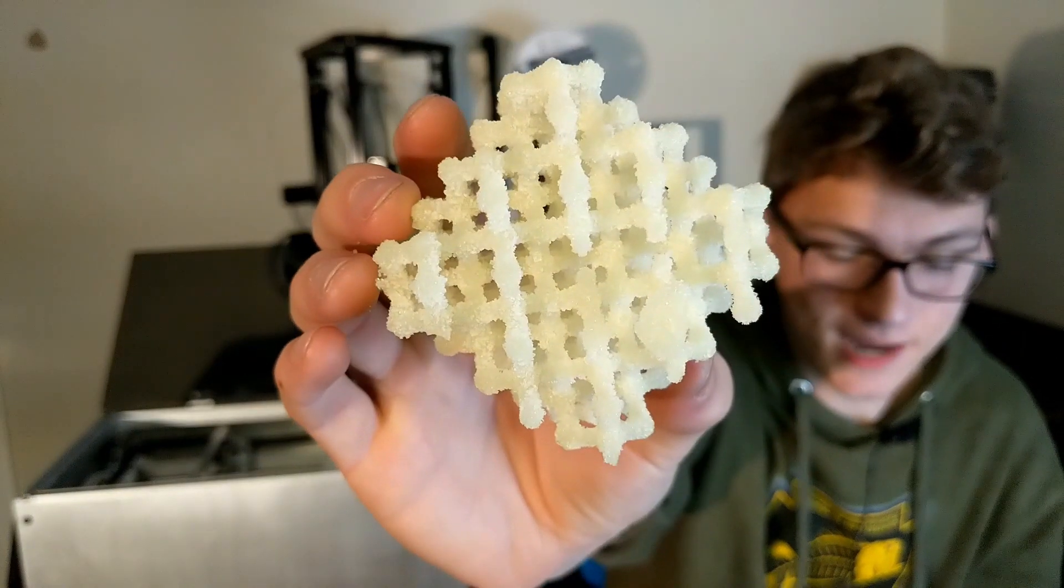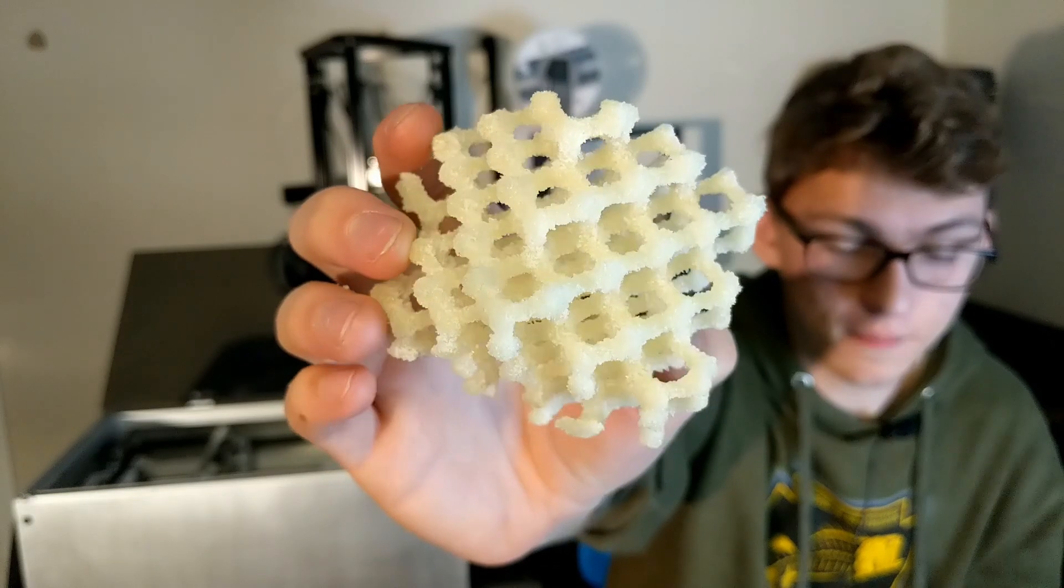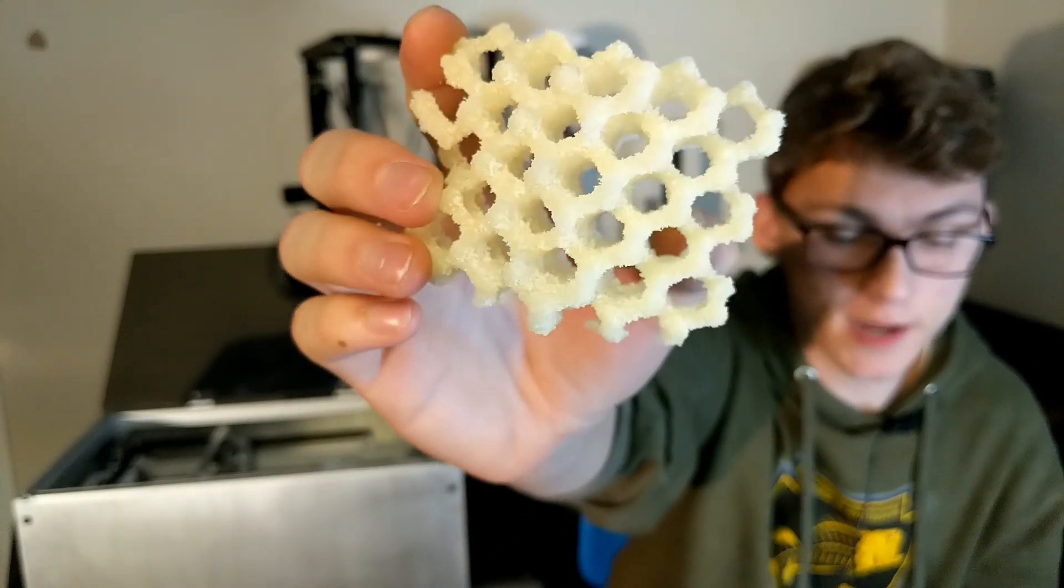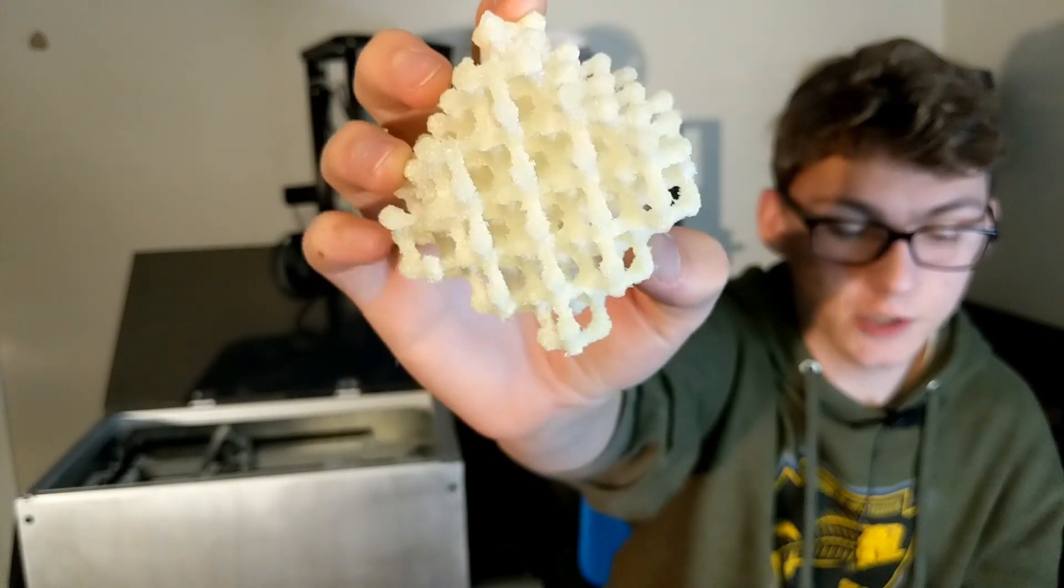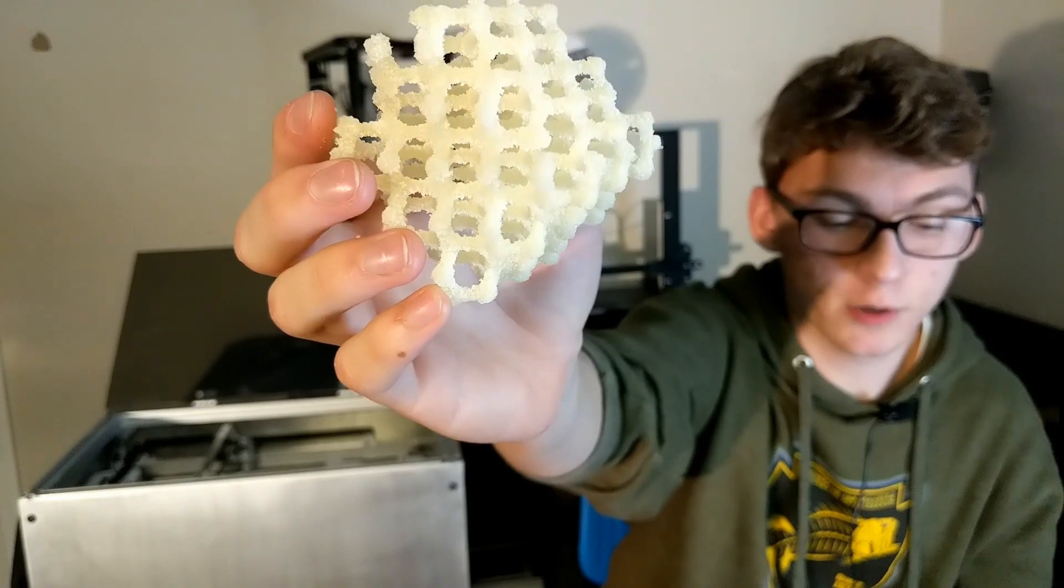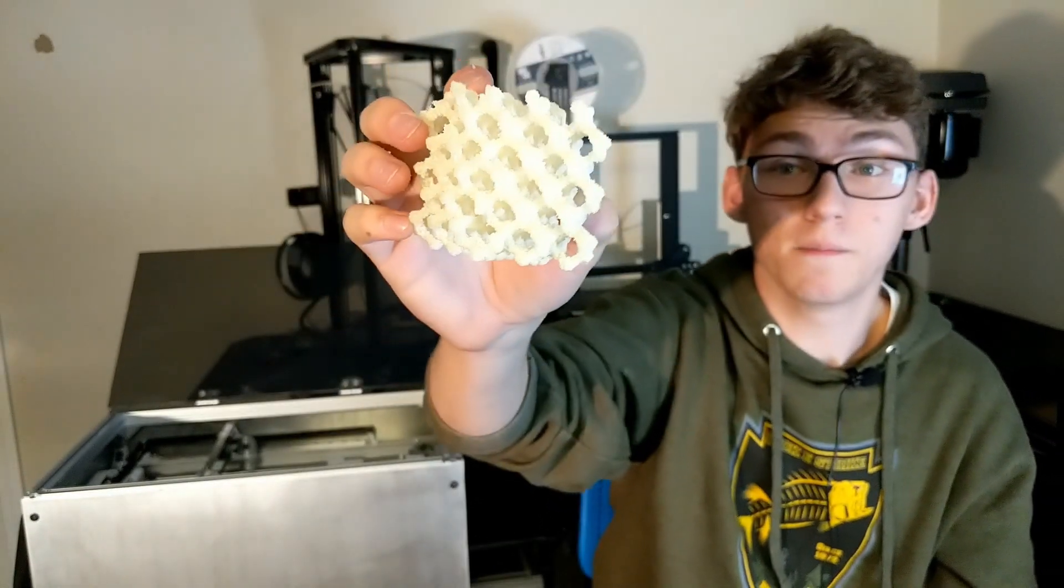And this one is my favorite model right here. This is diamond lattice. This you might recognize from Andreas Bastion's project, the open SLS project. But this right here is a really cool, intricate model. It shows off the fact that an FDM printer really couldn't make this because of the overhangs, because of how complex it is.